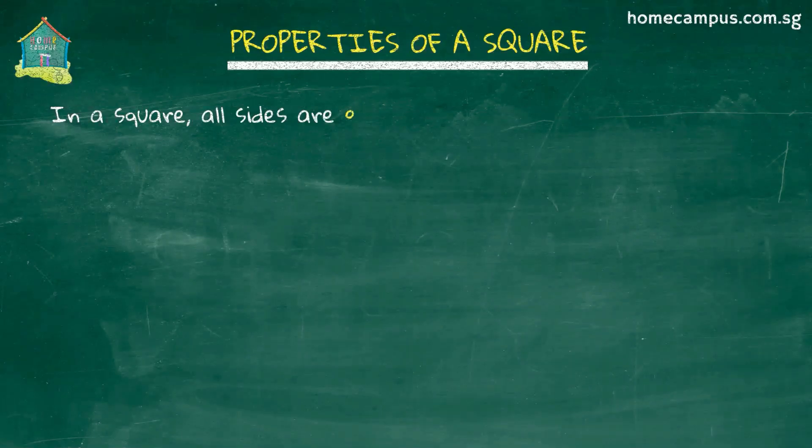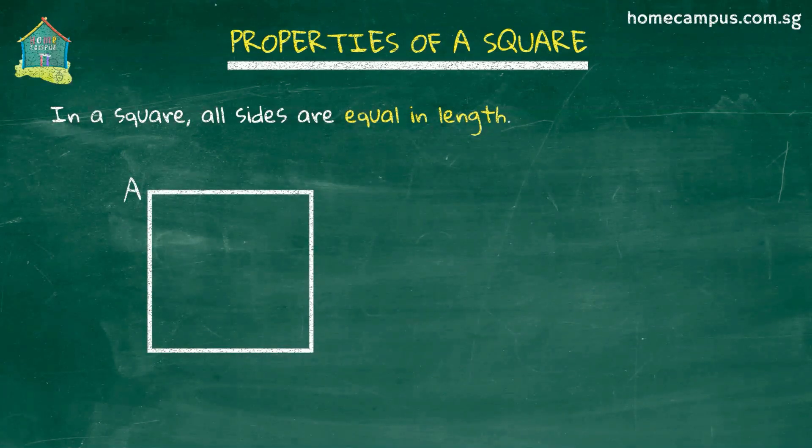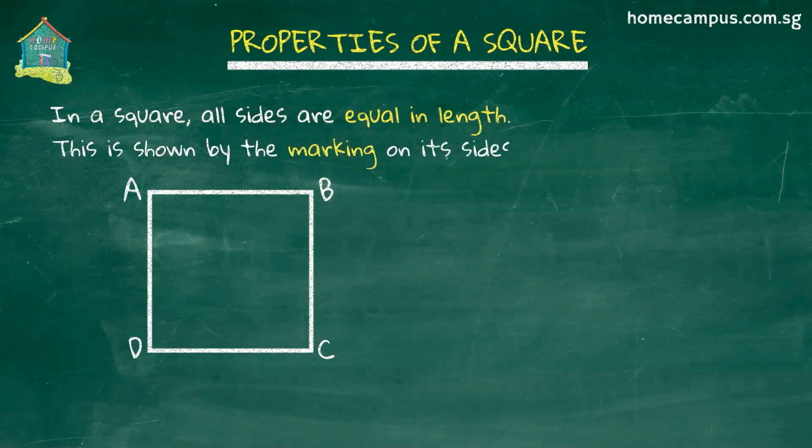The first property of a square is that it has four equal sides. We show this using these little markings on its sides. In this square, AB, BC, CD, and DA are all of the same length.